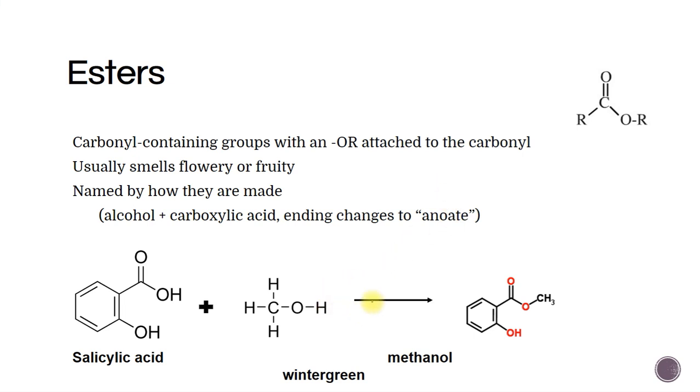Now esters are what you get when you take a carboxylic acid like this one. So here's our C=O, OH. And you connect it with an alcohol. In this case, this is methanol.